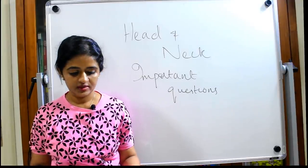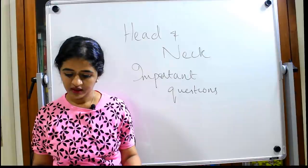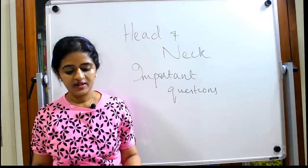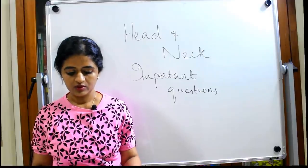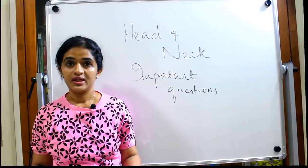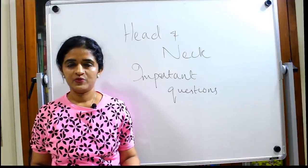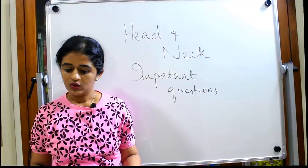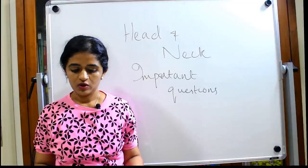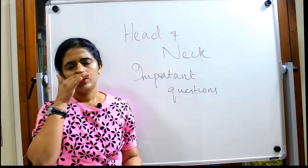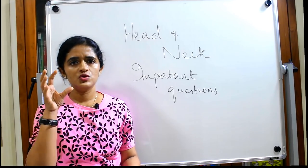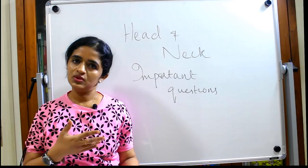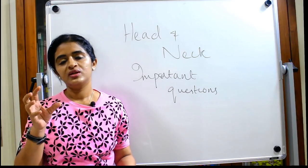Coming to the vertebral portion, in the cervical vertebra you can expect a short note on the first cervical vertebra or the second cervical vertebra — atlas and axis — as they are very important. These are the important points from osteology for the theory exam. For practicals you need to know the entire thing, but for theory all these can be asked as a short note.